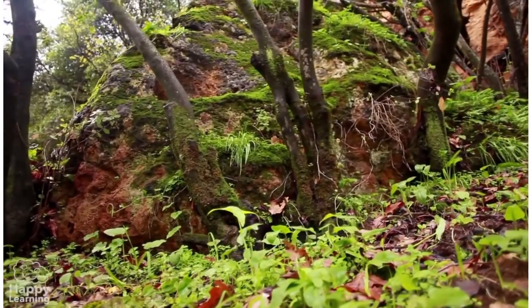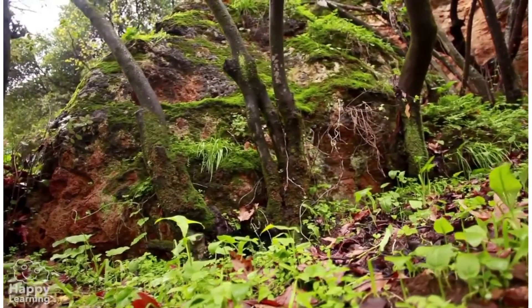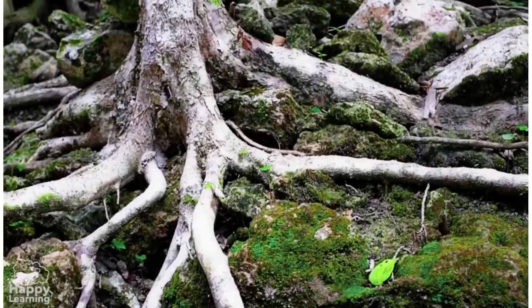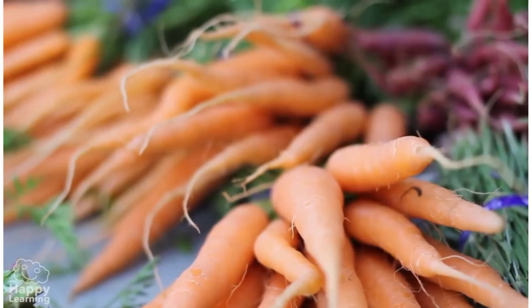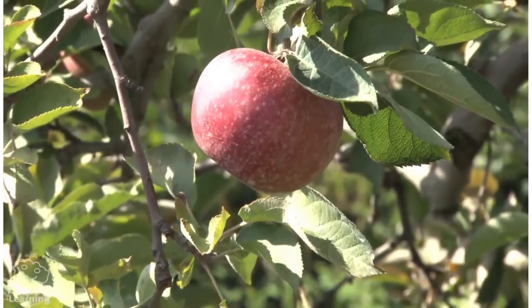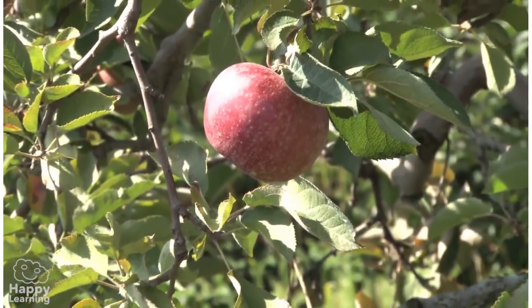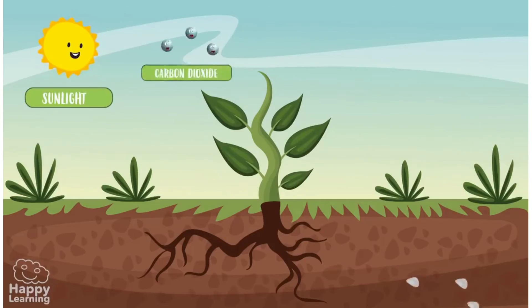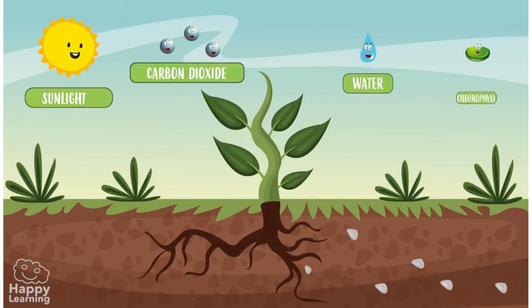All plants feed from elaborated sap, and they store it in their roots — like a carrot — or in their fruit, like an apple or a pear. Now we know how photosynthesis takes place.